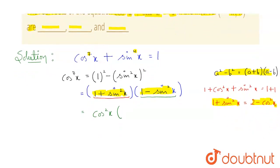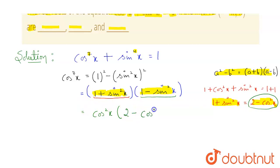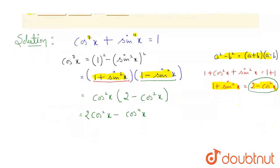So the value of 1 plus sin squared x is 2 minus cos squared x. Substituting this in, and opening the bracket, then shifting everything to the LHS, we get: cos 7x minus 2 cos squared x plus cos raised to the power 4x equals 0.